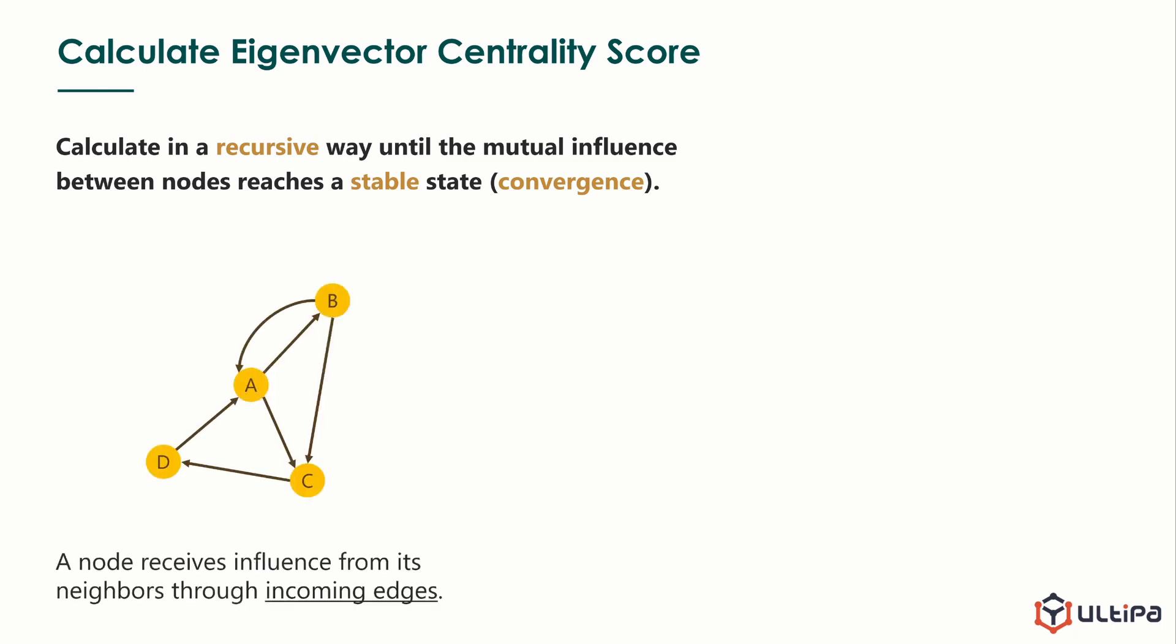The example graph is directed. A node receives influence from its neighbors through incoming edges. Node B and D have in-degree of 1, A has in-degree of 2 with neighbors B and D. C also has in-degree of 2 with neighbors A and B. Because node A has higher in-degree than D, we guess that in this graph, node C has higher eigenvector centrality than A. But let's see how exactly the calculation is done.